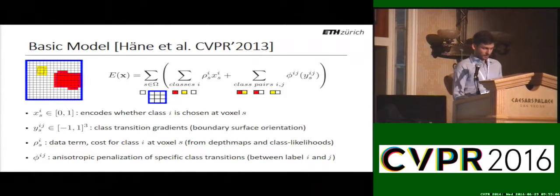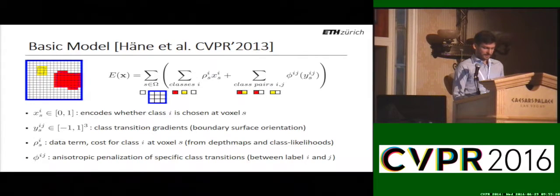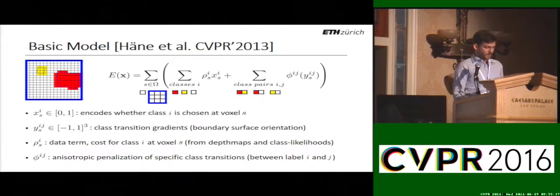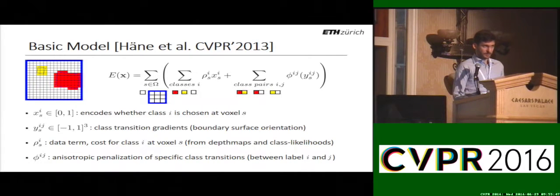We build our method on Henne et al. and extend it to work in adaptive discretizations of 3D space. The basic model is formulated as a convex energy function over a voxel space omega and encodes the following variables: the x's are indicator functions measuring the preference of a voxel to belong to a certain class; the y's are the local orientations of the boundary surface, defined for each pair of classes and each grid direction; rho is the unary term encapsulating depth map evidence and class likelihoods; and phi is the anisotropic class-specific prior, which in its non-metric form is one of the key ingredients to exploit semantics for 3D reconstruction.